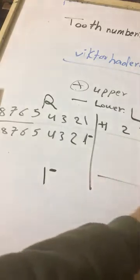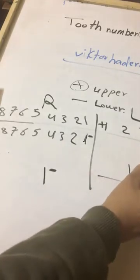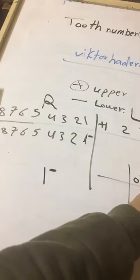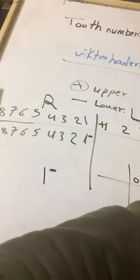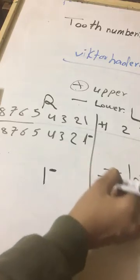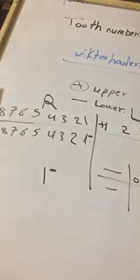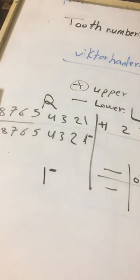For primary teeth, we put 01, 02, 03, 04, 05 in each quadrant. And in the same manner of the permanent.